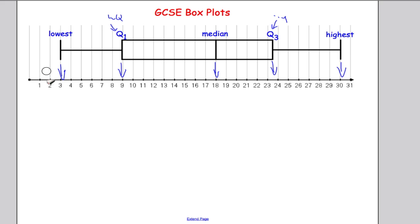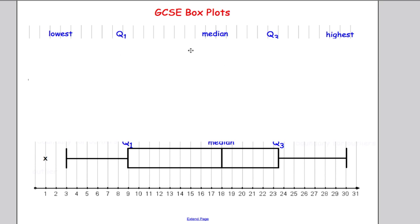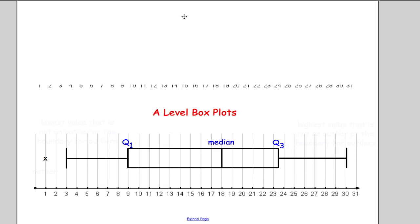Now there's a slight change of what we need to know for A-level. So at A-level a box and whisker plot will look very similar, but there are some subtle differences. First thing you may notice is we have this little X here. Now when we see an X in a box and whisker plot, it represents an outlier, so it's telling us where an outlier is. So now that we've learned how to find outliers, we can now represent them on our box and whisker plot.